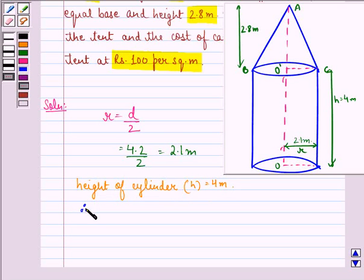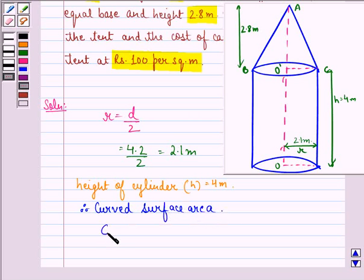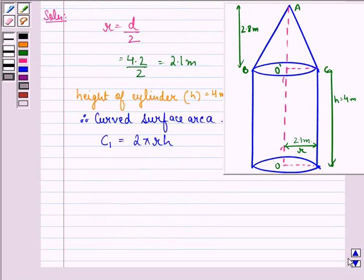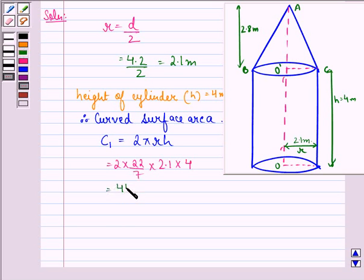Therefore, the curved surface area of the cylinder, say C1, is equal to 2πRH. That is equal to 2 into 22 by 7 into 2.1 into 4, that is equal to 44 into 0.3 into 4, that is equal to 52.8 meter square.